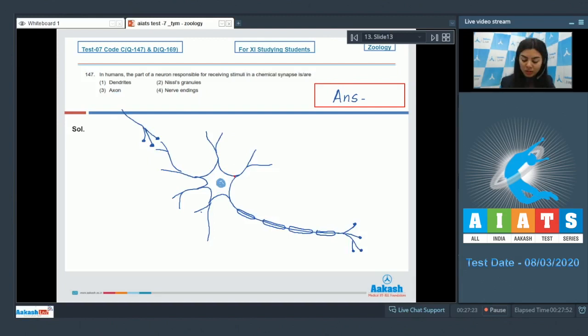In a typical neuron, the dendritic process arising from the cell are afferent processes and bring impulses towards the cell body. These dendrites are responsible for receiving stimuli in a chemical synapse. The correct answer is option 1.